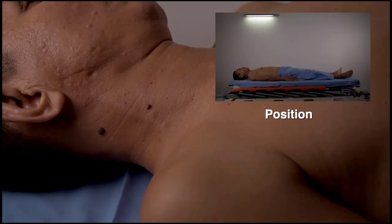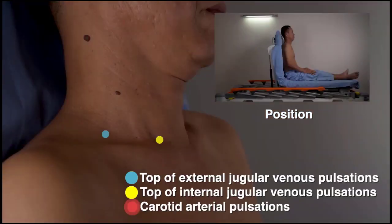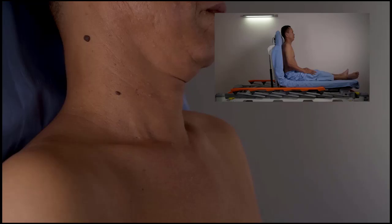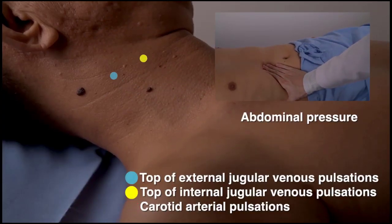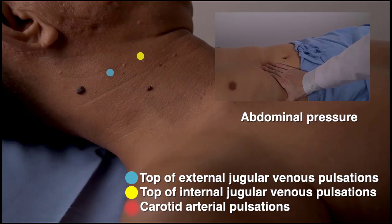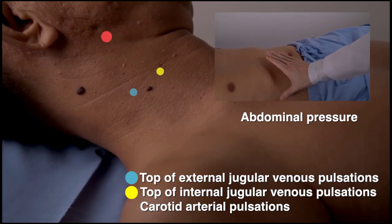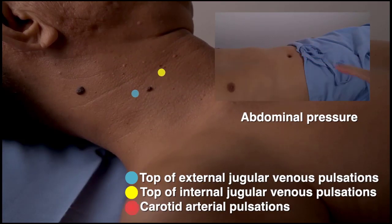Similarly, when the patient is sitting up, jugular venous pulsations decrease in the neck, whereas carotid arterial pulsations do not change. When the abdominal pressure is increased, jugular venous pulsations become more prominent and move higher in the neck, whereas carotid arterial pulsations do not change.